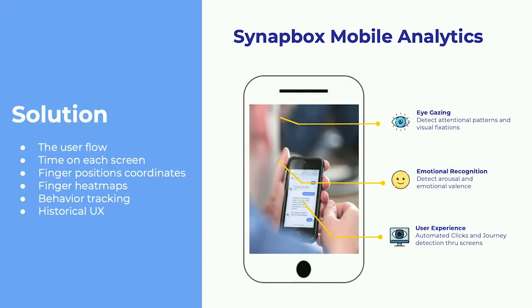What if we can change that by automating and personalizing a mobile app based on user interaction and user experience? The idea is to personalize the application for everybody. To do this, they enable historical data analysis to create a data source, and integrate eye gazing and emotion recognition to study the user flow, time on each screen, finger position, behavior tracking, and overall UX history.